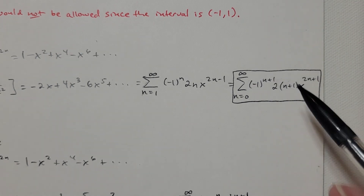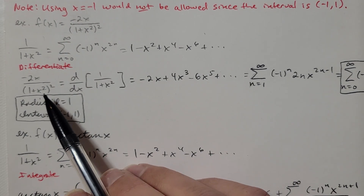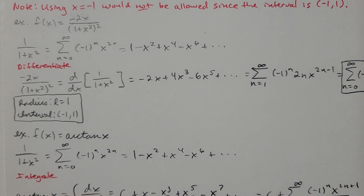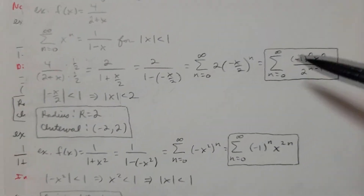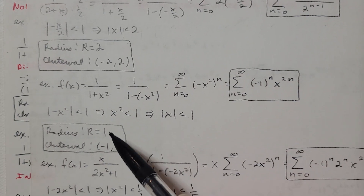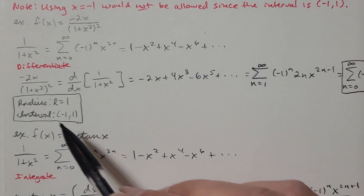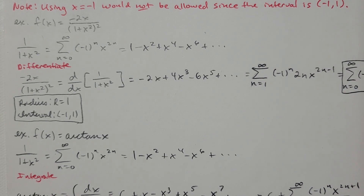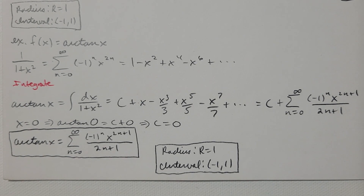That circled expression is the power series representation for -2x/(1+x²)². The radius and interval of convergence are the same as the original series — radius is 1 and the interval is (-1, 1). The differentiated series inherits the same convergence properties.